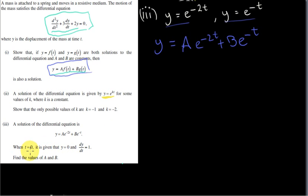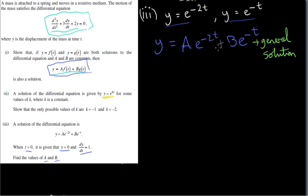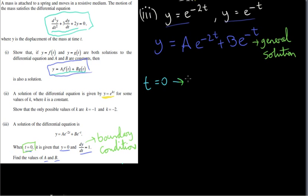We're also given some initial conditions: when t = 0, y = 0, and dy/dt = 1. From that information, we can find what a and b are. This general solution has a and b as general numbers that can take on any values. The initial conditions will let us determine the particular solution.